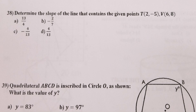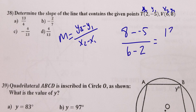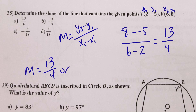Number 38: slope formula is (y₂ − y₁) / (x₂ − x₁). It doesn't matter which point you call first as long as you keep your pairs together — if y₂ is on top, x₂ must be on the bottom. So: (8 − (−5)) / (6 − 2) = 13/4. The slope is 13/4, or maybe you'd write it as 3 and 1/4. That's it for number 38.